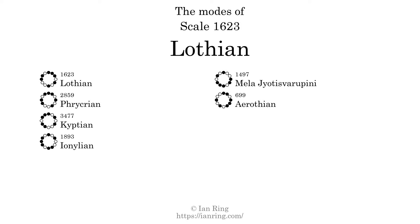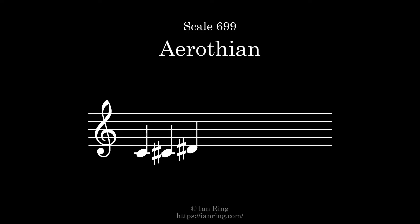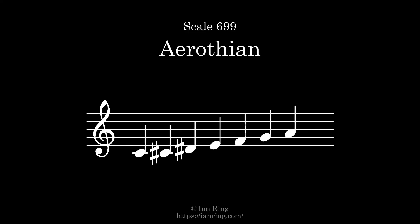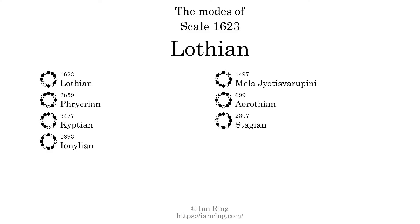The sixth mode is scale 699, also known as Erothian. It sounds like this. The seventh and last mode is scale 2397, also known as Stajian. It sounds like this.